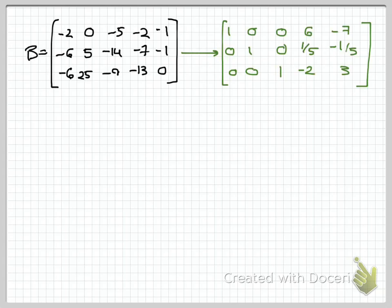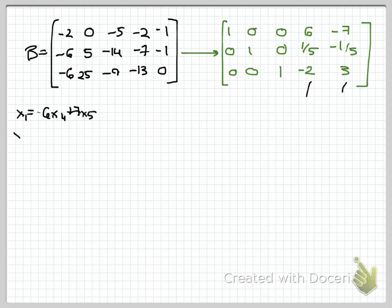Now what about the null space of B? The null space of B is the set of all solutions to Bx = 0. A solution vector would be in R5, not R3, since there are five variables. The reduced row echelon form tells me that X4 and X5 are free variables. From there: X1 = −6X4 + 7X5, X2 = −(1/5)X4 + (1/5)X5, and X3 = 2X4 − 3X5.